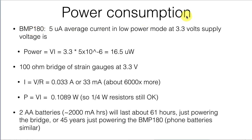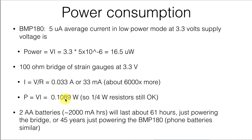To put the BMP-180's power consumption in perspective: running at 5 microamps with a 3.3 V supply, it consumes 16.5 microwatts. Compare that to a Wheatstone bridge made of 100-ohm sensors supplied with 3.3 V excitation — that draws about 33 milliamps and consumes about a tenth of a watt. That's a difference of 10 to the fifth in power consumption magnitude.